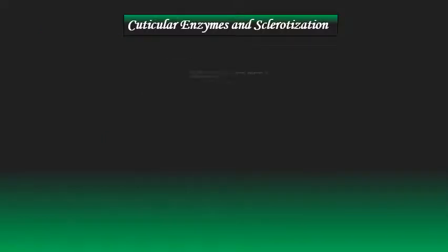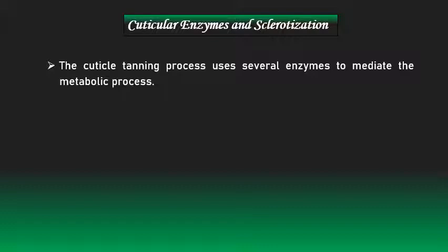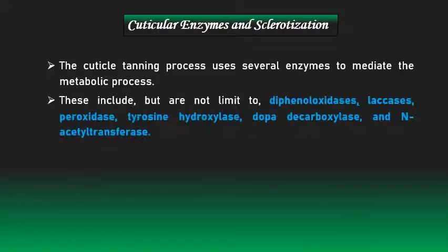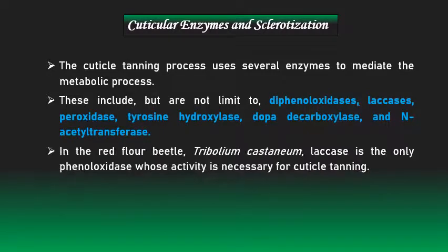The cuticle tanning process uses several enzymes to mediate the metabolic process. These include, but are not limited to: diphenol oxidases, laccases, peroxidase, tyrosine hydroxylase, DOPA decarboxylase, and N-acetyltransferase. In the red flour beetle Tribolium castaneum, laccase is the only phenol oxidase whose activity is necessary for cuticle tanning. All these metabolic events in insects occur under the influence of the hormone Bursicon — that is why Bursicon is termed the insect cuticle tanning and hardening hormone.